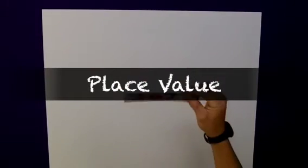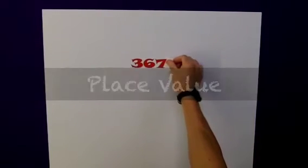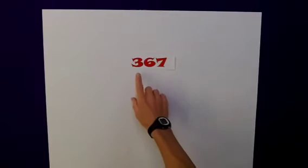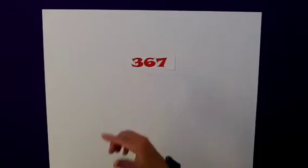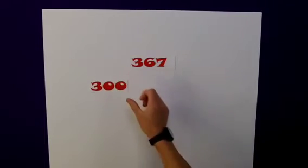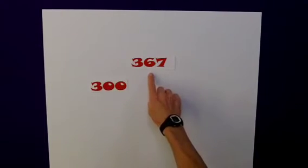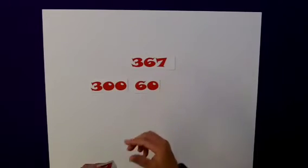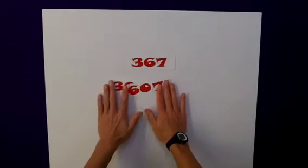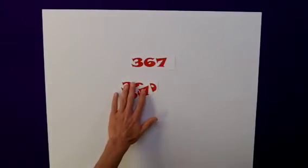Before we start with the method, it's probably worth reminding ourselves about place value. For example, if we take the number 367, this digit here, the 3, is not a 3. It represents the 300. Likewise, the 6, not a 6, that represents the 60. And obviously, the 7 on its own. And all together, that represents 367.